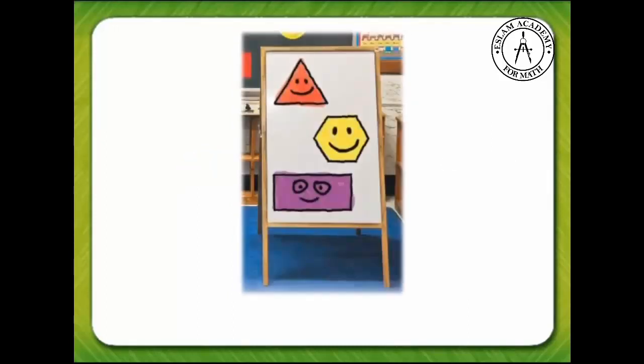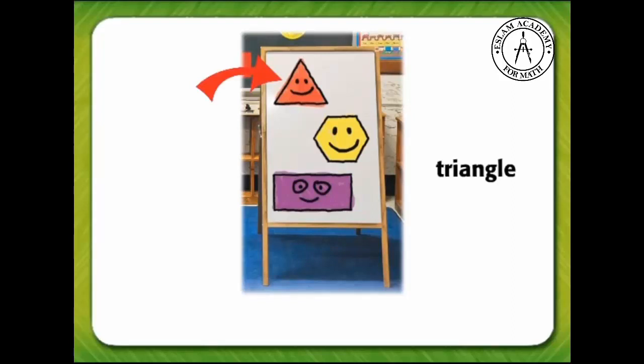Isabel also drew three shapes on her easel. What is the name of the red shape on the top? It is a triangle.